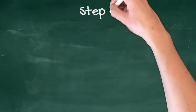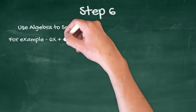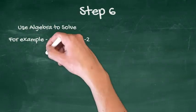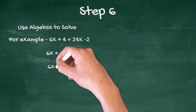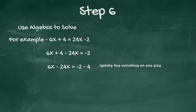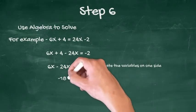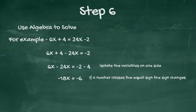Step 6. Use algebra rules to solve the equation. Simplify each side of the equation by removing parentheses and combining like terms. Use addition or subtraction to isolate the variable term on one side of the equation. If a number crosses to the other side of the equation, the sign changes to the opposite. For example, positive to negative.